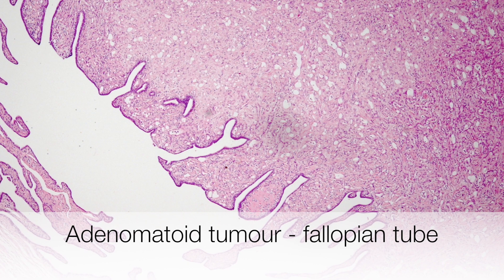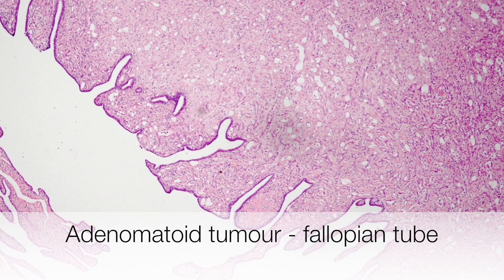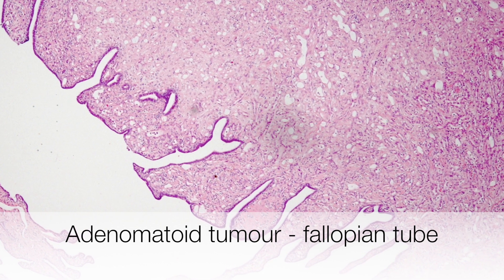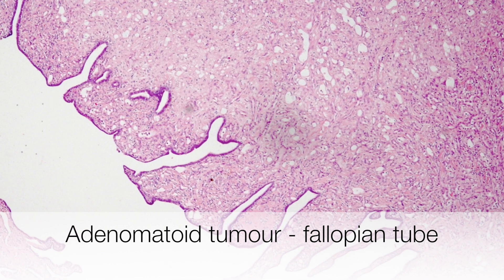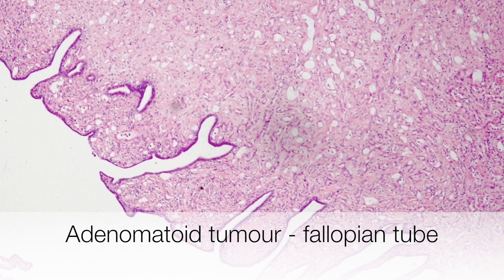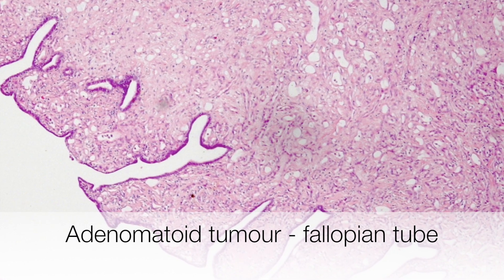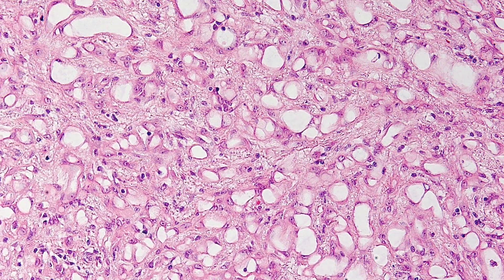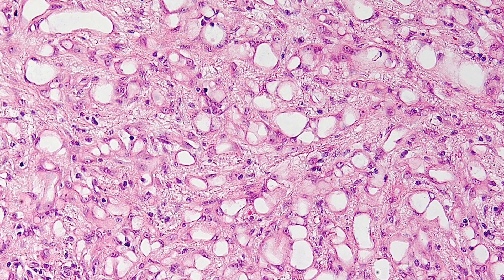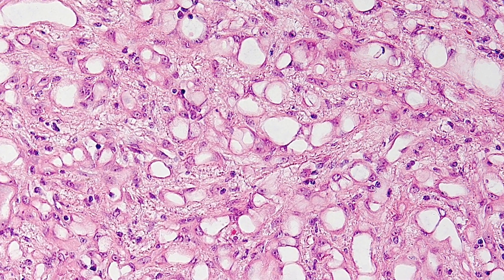This is a low power view of an adenomatoid tumour of the fallopian tube. You can see the lumen of the fallopian tube on the left hand side of the picture; on the right side is the adenomatoid tumour that extends right up to the epithelium. A high power view reveals gland-like structures lined by very attenuated epithelium.